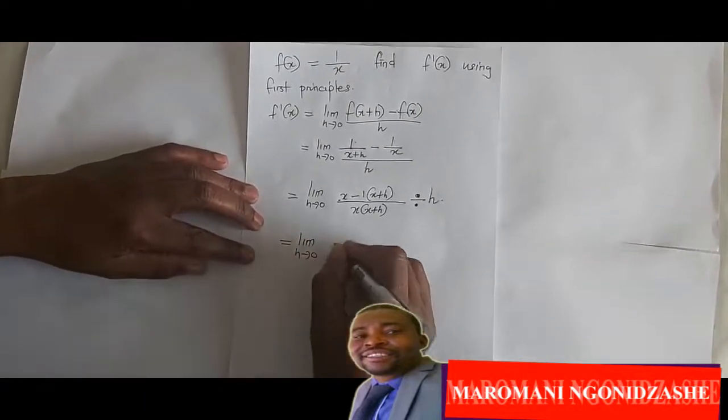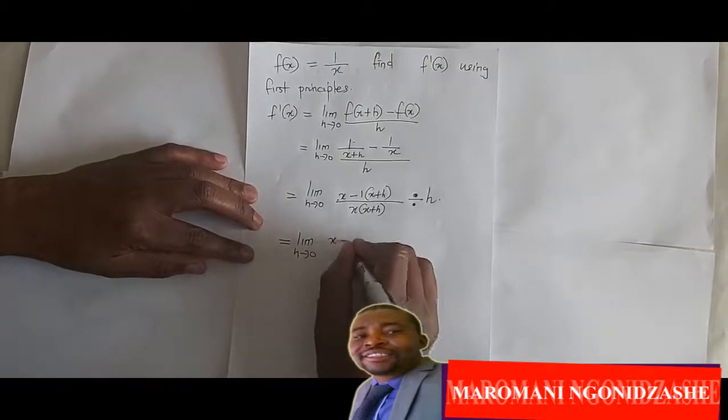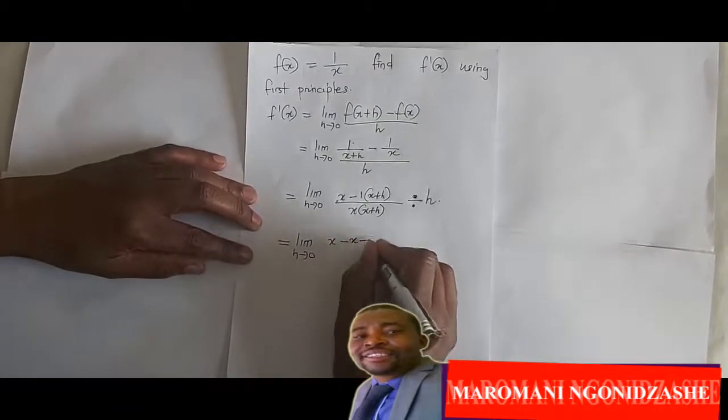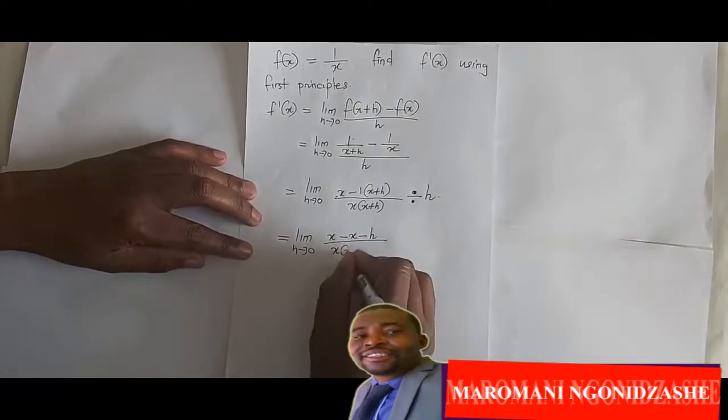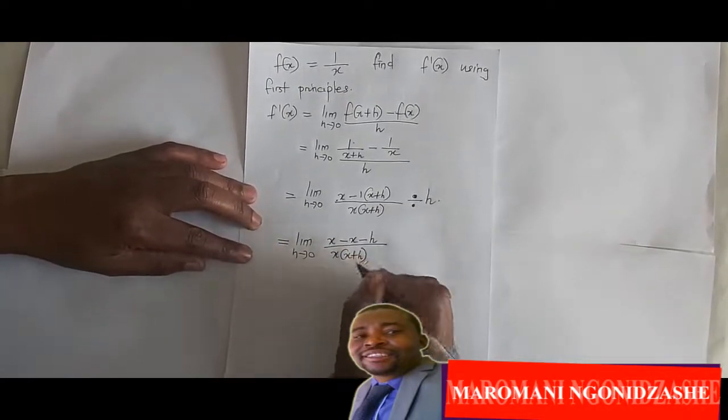x minus x minus h all over x into x plus h, divided by h.